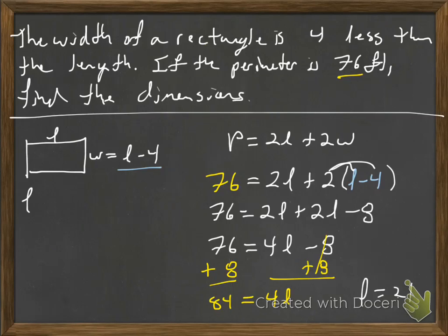And 4 less would be 17, and that's what our width is going to be. If I check this, the 2 width, 17 plus 17 is 34. It's 21 plus 21, the 2 lengths is 42. 34 plus 42, 76. So it looks good to me.